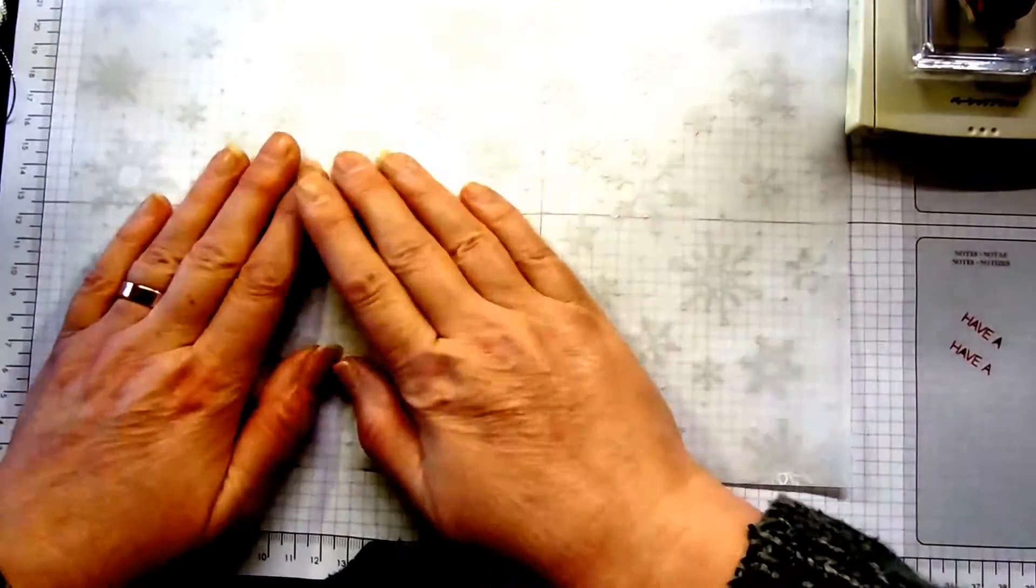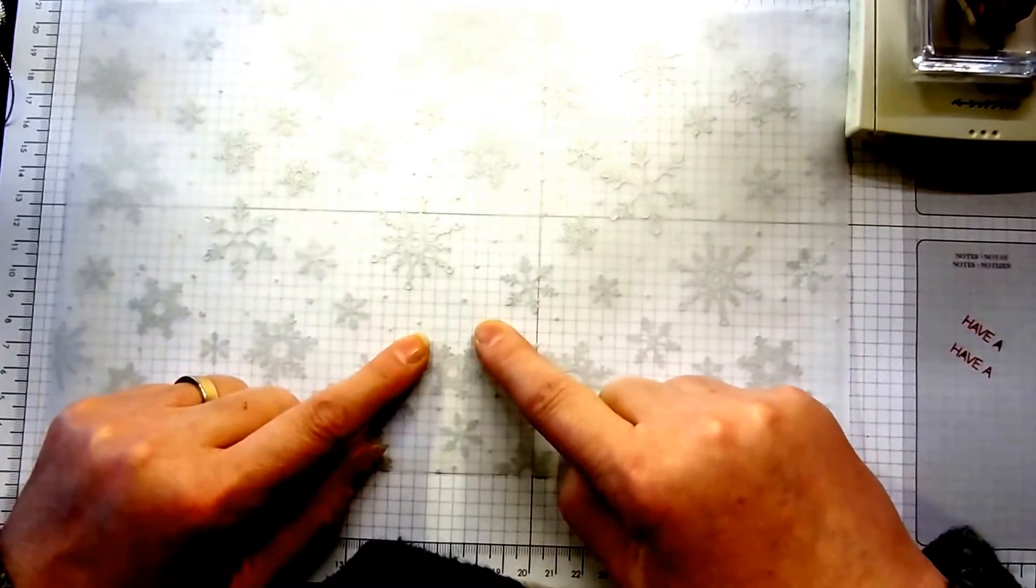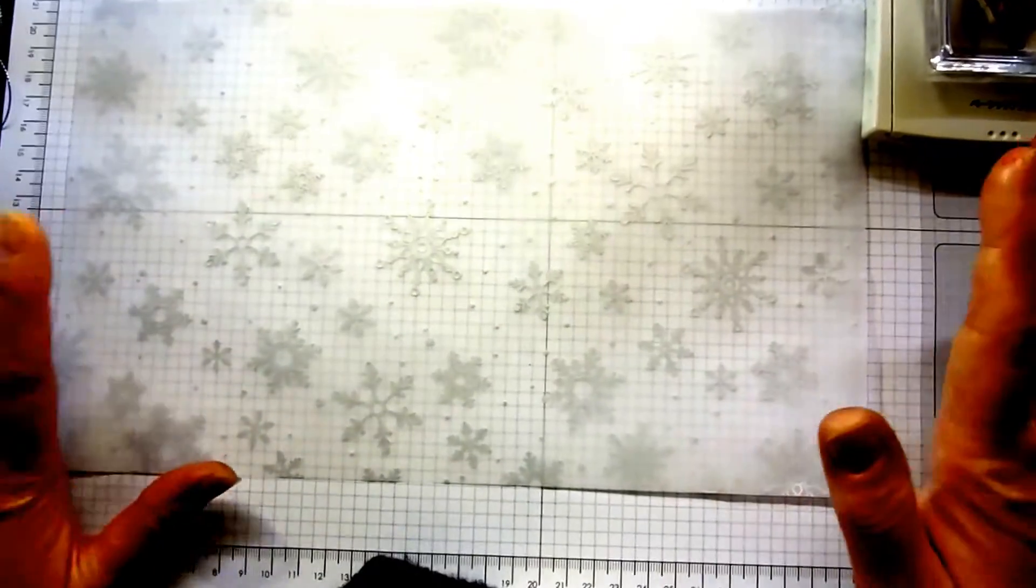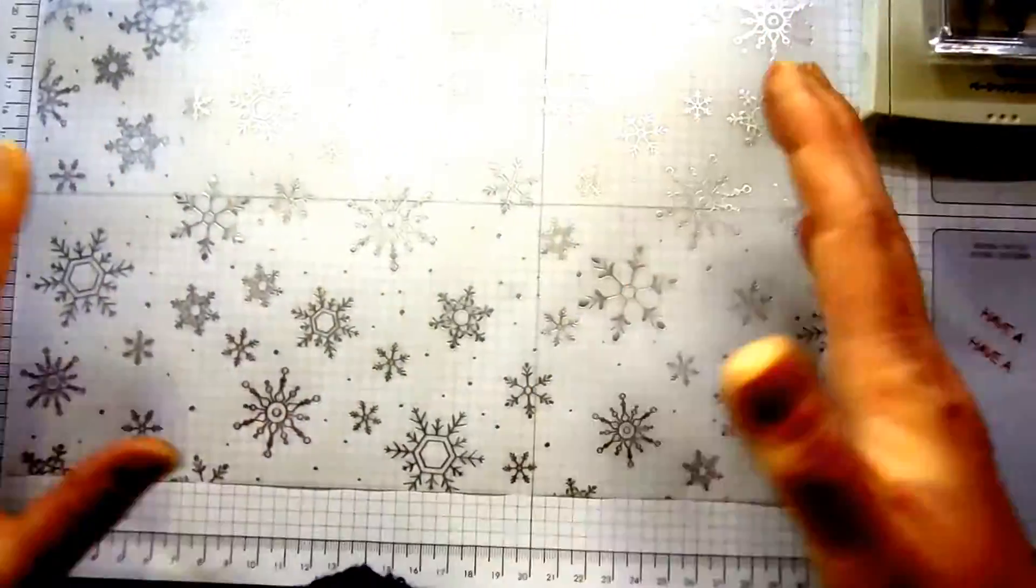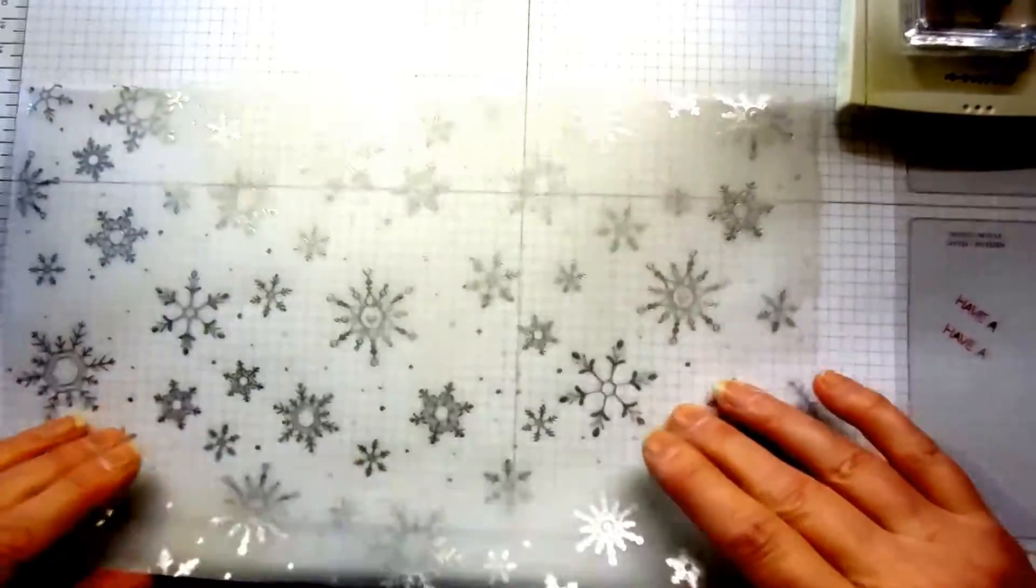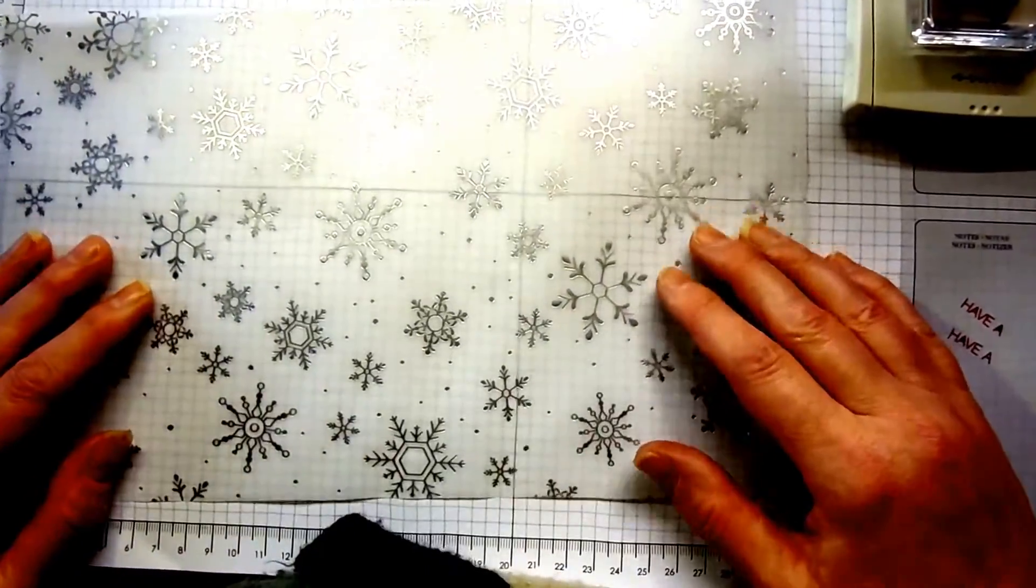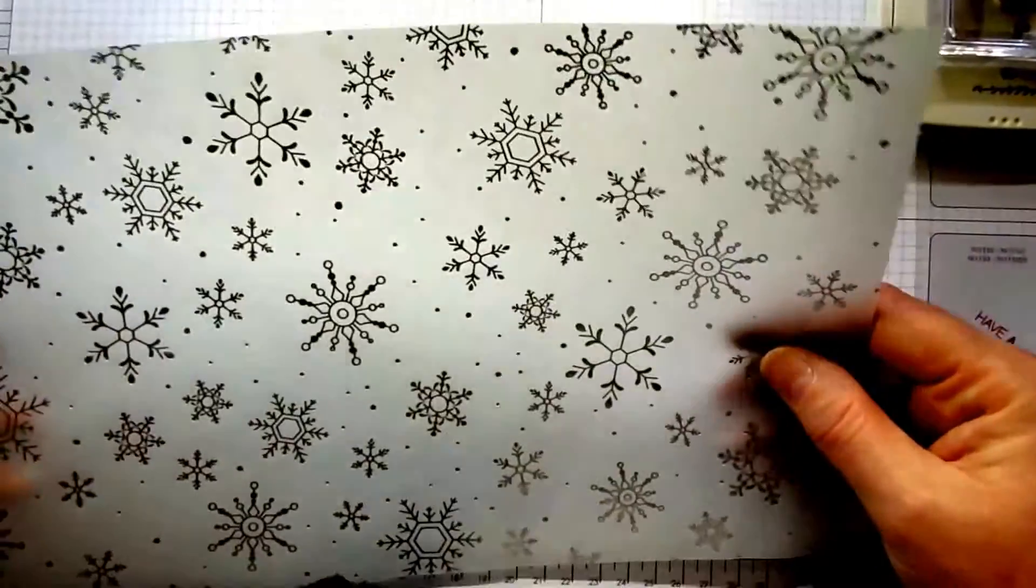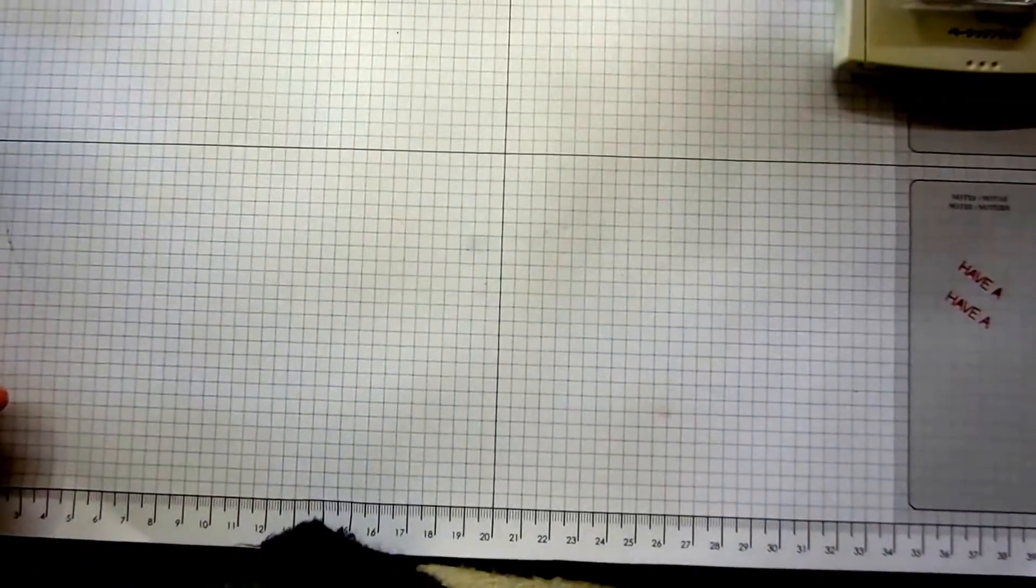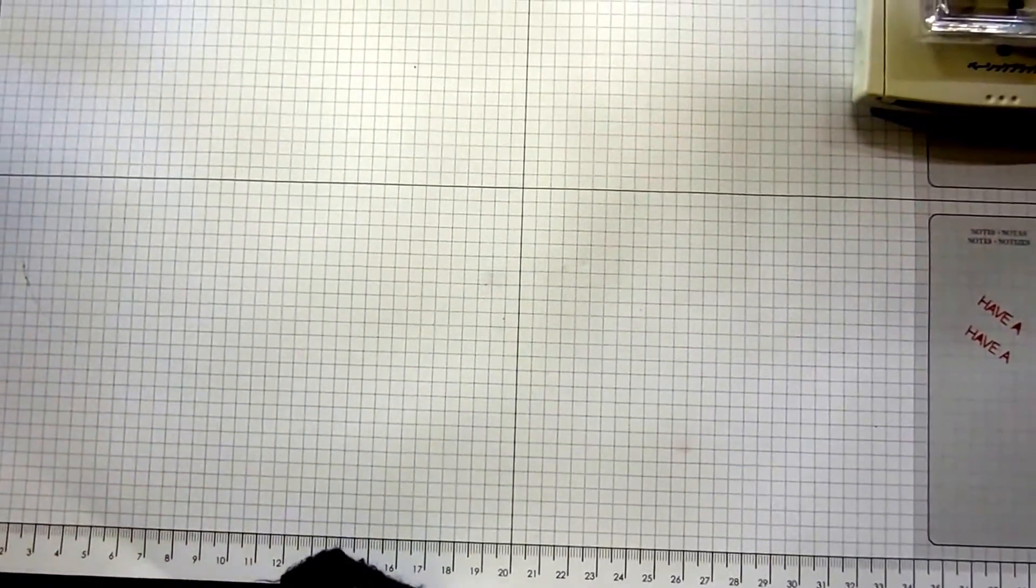When you turn it over, you actually get what looks like white snowflakes. I just think it's divine. Why heat emboss onto vellum if you've already got the job done for you? That's how I see it, especially at Christmas when you're trying to make a lot of goodies for your friends and family.